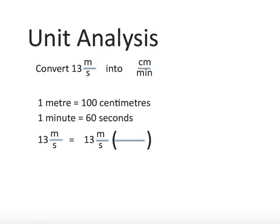Next, we're going to begin the problem. We start off by rewriting 13 meters per second. Notice I have placed a fraction next to that, and the reason why we're placing this fraction is that we want to cancel out one of the units. We could do this all in one step, but we're going to do one unit at a time.